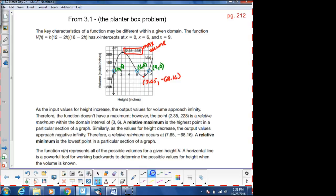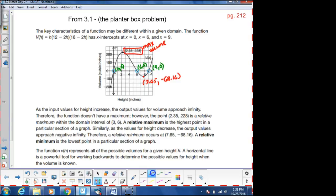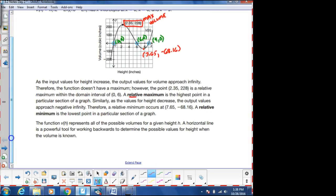The first concept of the day today is going to be something called relative maximums. A relative maximum is the highest point in a particular section of graph. So if you think about it in terms of Wausau, Rib Mountain is the relative maximum in the city of Wausau.